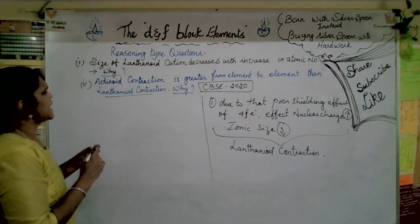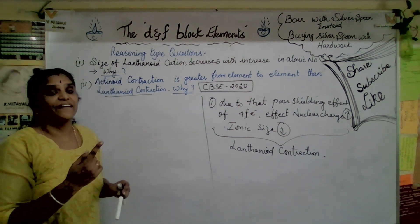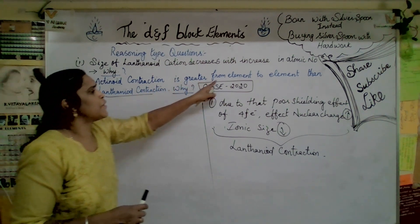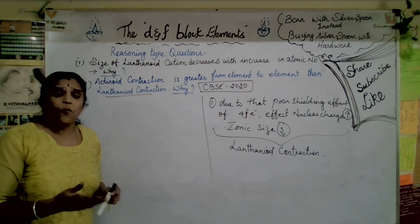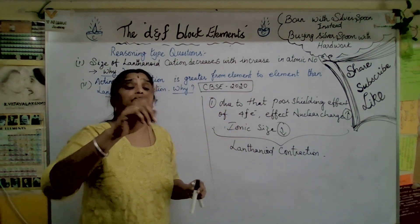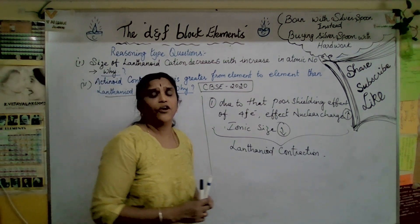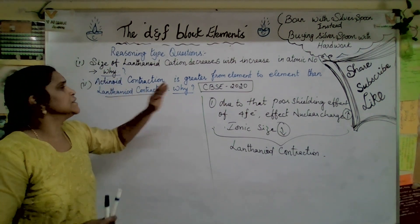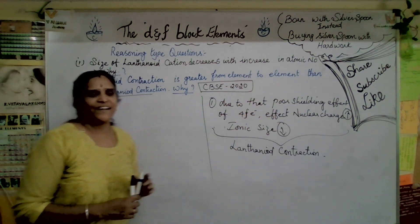That was the first question. Now the second question: actinoid contraction is greater from element to element than lanthanoid contraction. Why? Because the actinoid series has both 4F and 5F electrons available, whereas in lanthanoid contraction only 4F electrons are available.